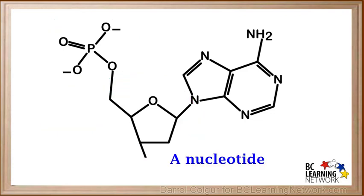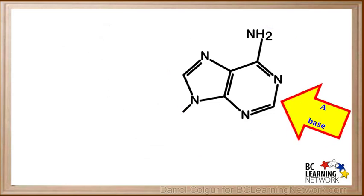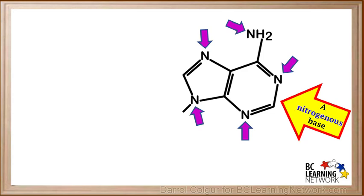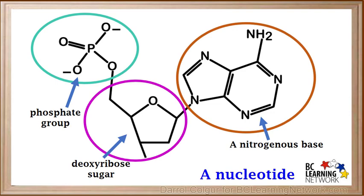Looking at the whole nucleotide again, we'll concentrate on the group on the right. This is what we call a base. And because it contains a number of nitrogen atoms, we can also call it a nitrogenous base. If this was a single molecule rather than being part of a nucleotide, it would have a hydrogen atom here, and it would be called adenine. So to summarize, our nucleotide consists of three major parts: a phosphate group, a sugar called deoxyribose, and a nitrogenous base. Remember, the phosphate group is connected to the 5 prime carbon of deoxyribose, and the base is connected to its 1 prime carbon.